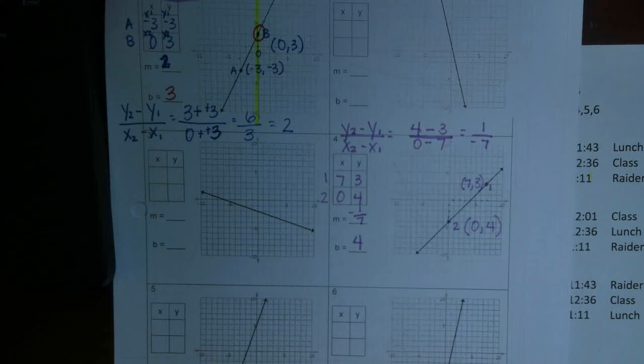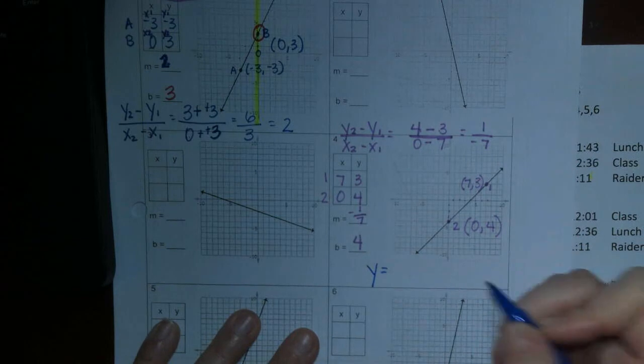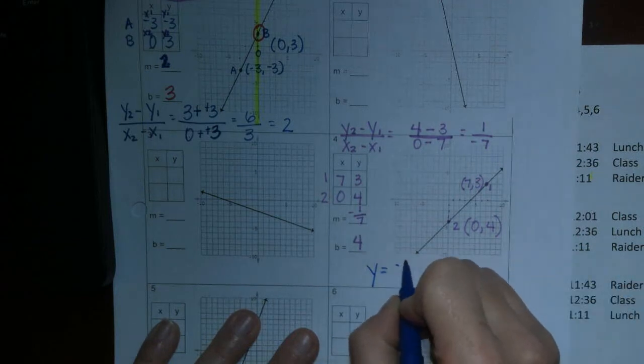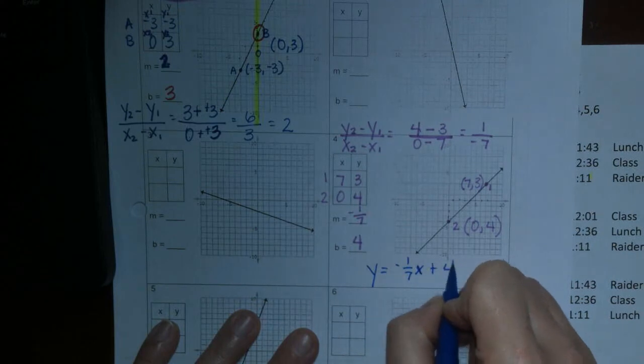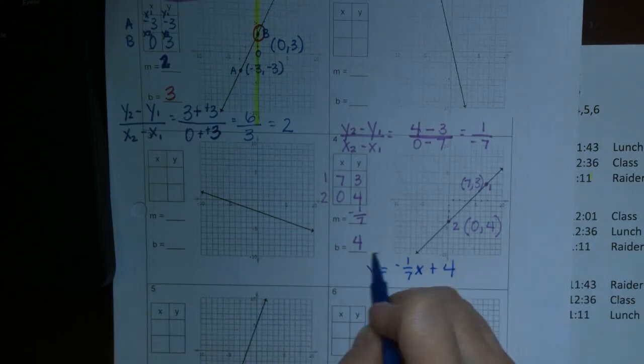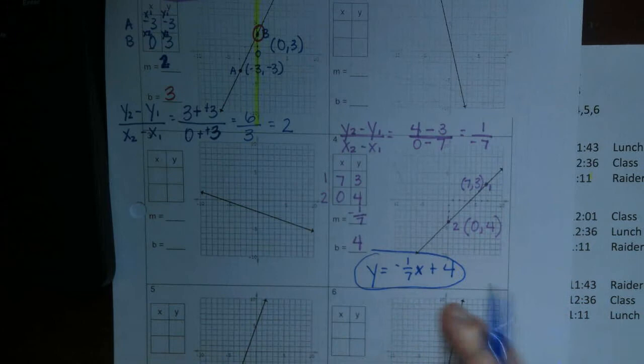So now, can you please make your equation? y equals m. What's our m? Negative 1 7th x plus b, 4. That's the equation of that line.